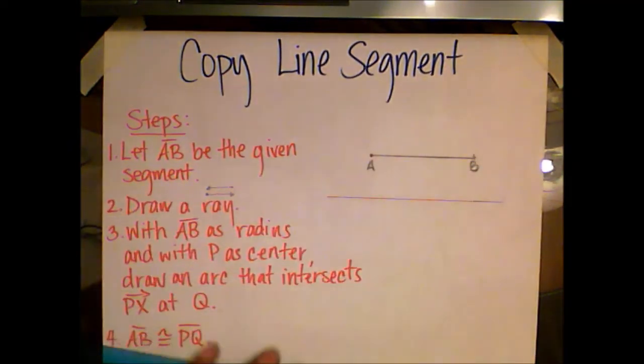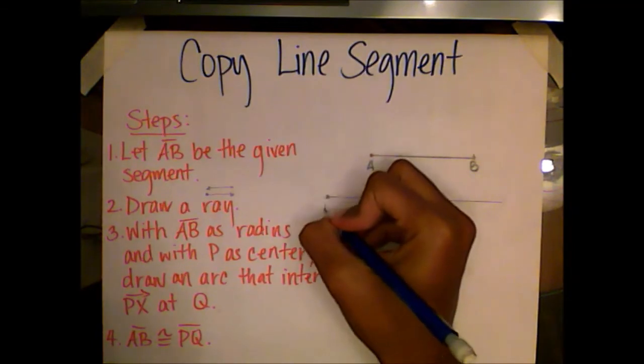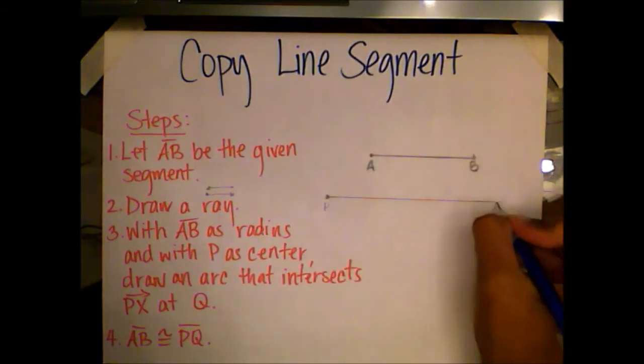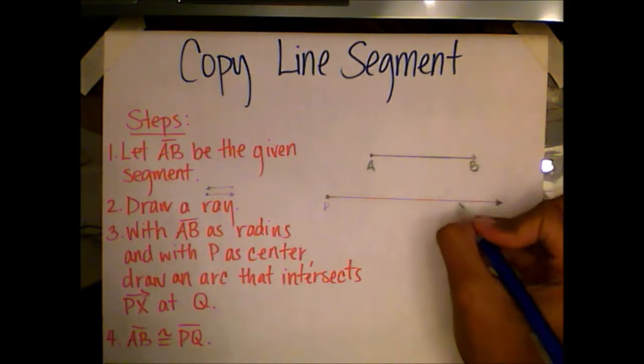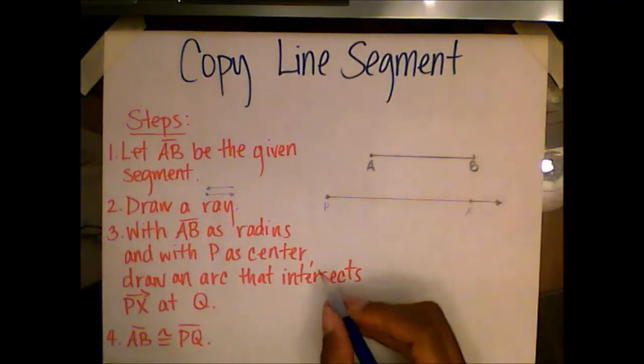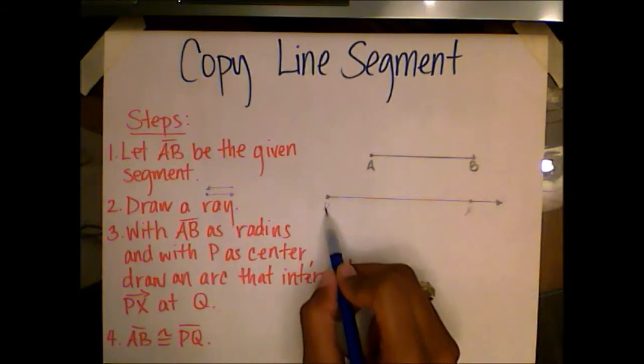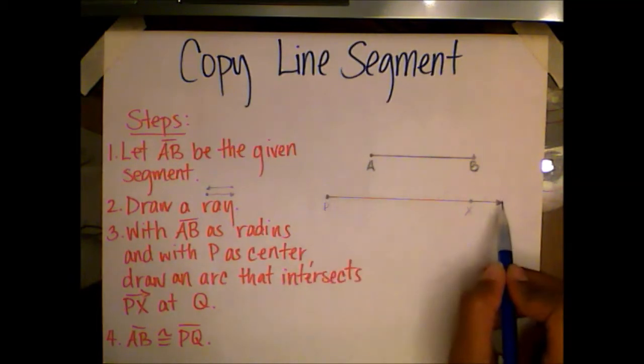Now remember, we're making a ray, so it has to have an endpoint, and I'm going to call this endpoint point P. It has to go on forever in one direction. The other point on it, I'm going to name point X. So now we have ray PX. It starts at P, P is its endpoint, and it goes through X.